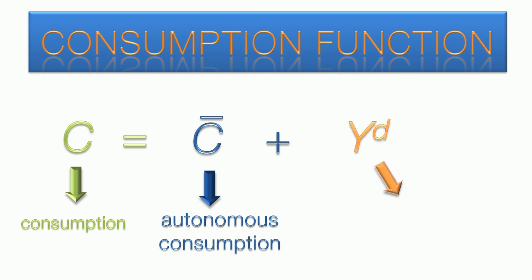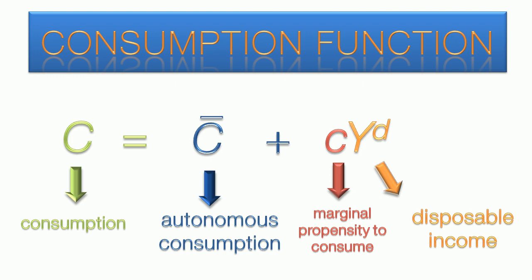Next we have disposable income. This is after-tax income. Disposable income is multiplied by the coefficient c, the marginal propensity to consume. This tells us how much consumption increases for every dollar increase in income. The MPC coefficient can be between 0 and 1.